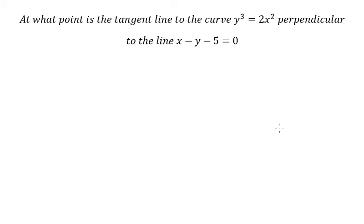We have x - y - 5 = 0. We rearrange to get y = x - 5. So we know that the slope of this line is 1.